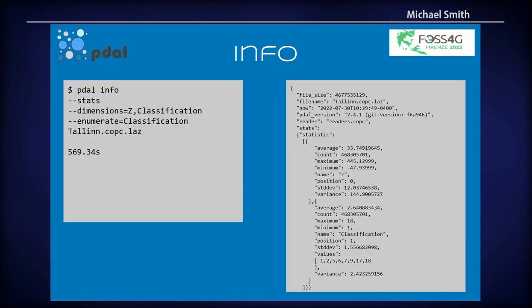Here's an example of running Poodle info on that file. You can see it was a very big file — 467 megs, 468 million points — so a pretty good size. It took almost 10 minutes to read the entire file because I was getting stats over the entire file. But since this is a COPIC file, we can set a particular resolution. One of the options on the reader for COPIC is to set a resolution. Now you can see that in less than a minute and a half I was able to read the entire file just at a different resolution. The point count dropped, but my overall average is right in the same range. That's one of the big advantages of COPIC data — you can now do summary reads without having to read the entire file, and you can read it to a certain depth or a certain resolution.